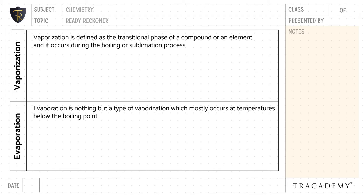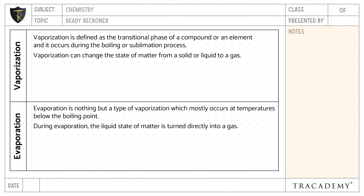Evaporation is a type of vaporization which mostly occurs at temperatures below the boiling point. Vaporization can change the state of matter from a solid or liquid to a gas. During evaporation, the liquid state of matter is turned directly into a gas.